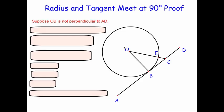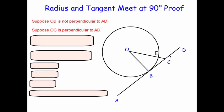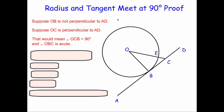So let's pretend that OB is not perpendicular to the tangent, and that there's another line OC that is perpendicular to the tangent. Now if OC forms a 90 degree angle, that would mean this angle at B would have to be acute. The reason is that in a triangle, you can only have one 90 degree angle, so the other angles must be smaller.